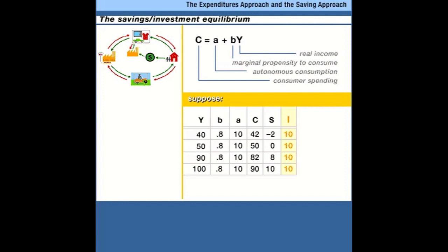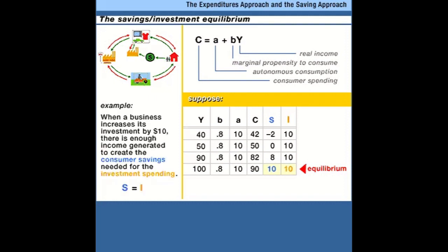Our new equilibrium is going to be at income of 100, because only when equilibrium income is 100 is there enough of a gap between planned consumption and income to create the savings that satisfy businesses' demand for investment spending. When businesses increase investment spending by 10, they generate enough income so that consumers do the savings that satisfies their need for capital. If you take investment spending and add it to consumer spending, 90 plus 10 is 100 — aggregate expenditure equals income. Equivalently, the amount being saved equals the amount of investment spending businesses want to do.